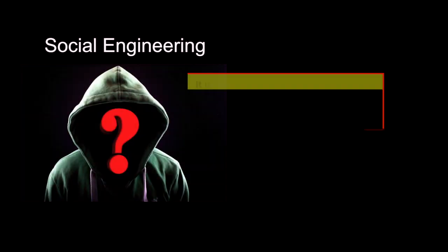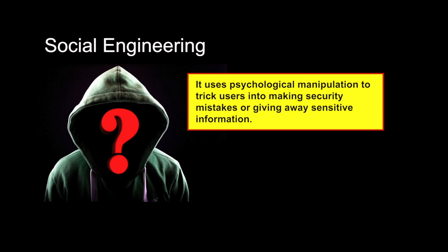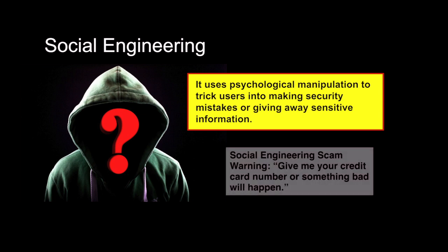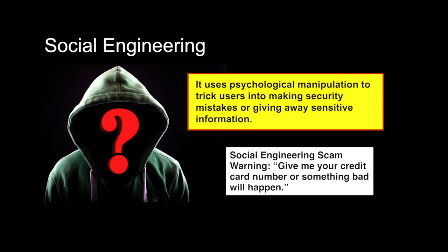Social engineering involves gaining trust. The fraudster poses as a member of staff or even a security guard, and would then ask the customer to check the card for damages. The fraudster would have gained confidence from the prey using various tactics such as offering assistance to a customer who perhaps tried to use the ATM without success, or a customer who is not familiar with the ATM machine and requires assistance.